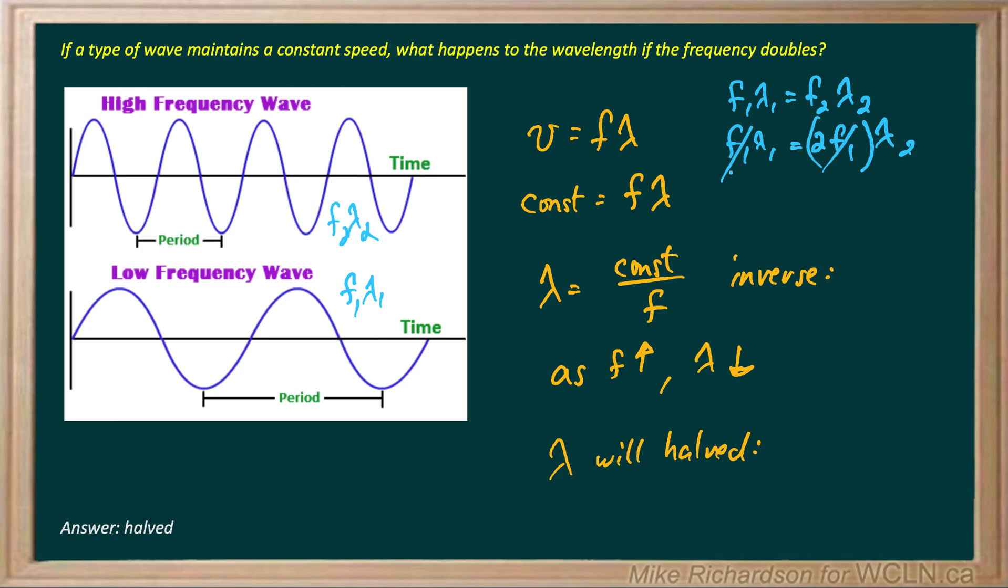The f1s cancel. And you can see if I solve that for lambda 2, it'll be lambda 1 over 2, half the wavelength.